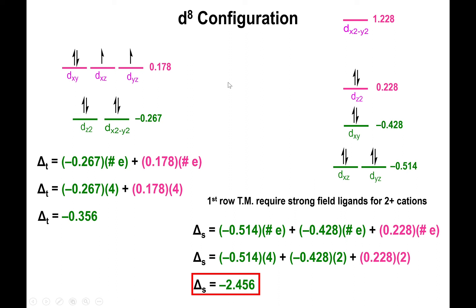Just having the d8 configuration doesn't necessarily mean you're going to have the square planar shape, although it's a good indication. If your transition metal is first row and the charge is low, like 2 plus, you will probably end up with a tetrahedral structure instead of square planar.